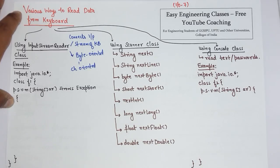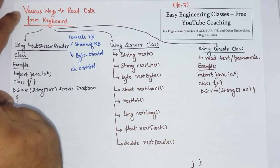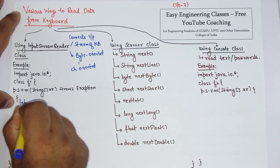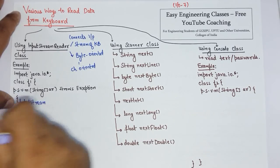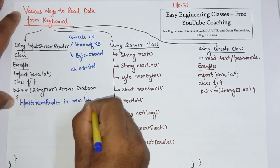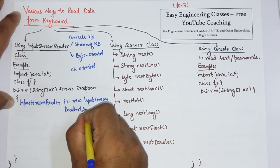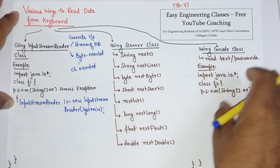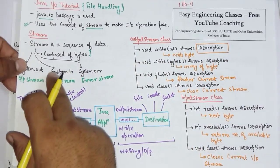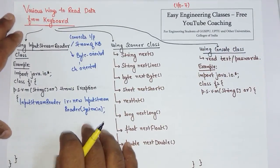To use InputStreamReader, you also have to use the BufferedReader class, which is used to read data line by line using the readLine() method. First, you have to create an object of InputStreamReader. For example: IR = new InputStreamReader(System.in). System.in is the console input stream, one of the three types of streams we studied in the introduction to file IO.